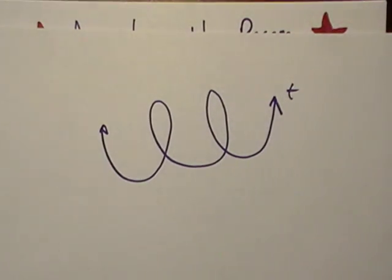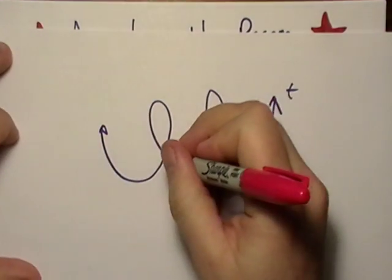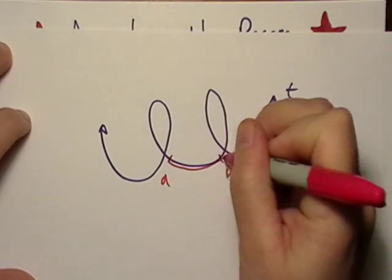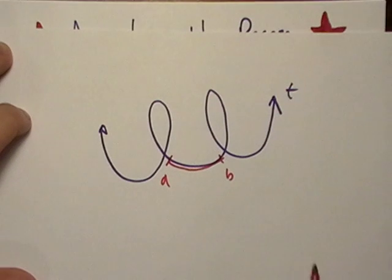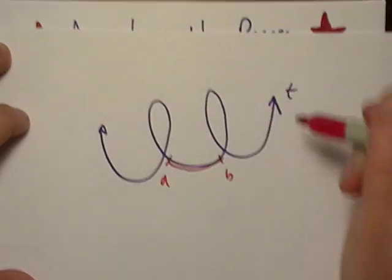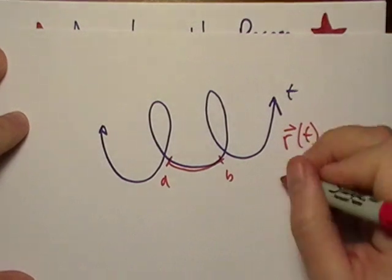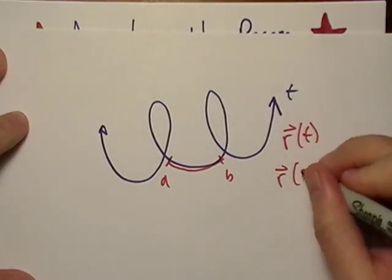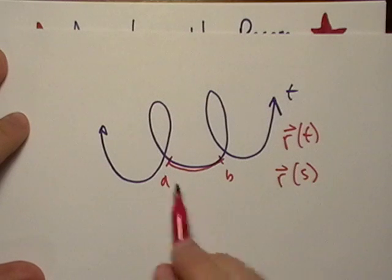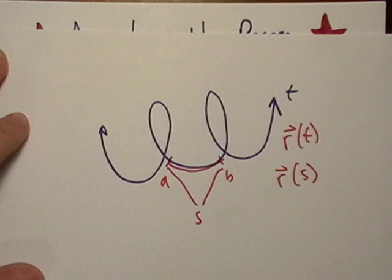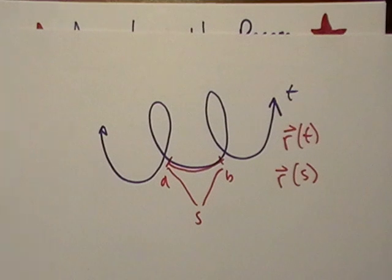So if we want to parameterize this thing by its arc length, then what we're going to have to do is we're going to find out our point of interest, from A to B. Say we want to find out how long it is right here, from A to B, okay?